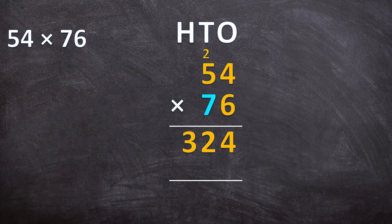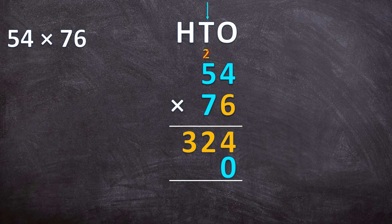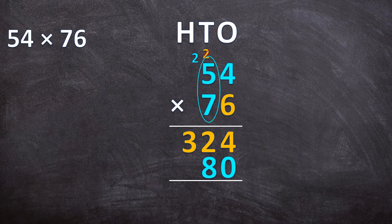Now we multiply 70 by 54. Remember: scratch out that carried 2 so we don't confuse ourselves, and add a 0 in our answer line because we are multiplying by 70 and not by 7. Now multiply the digits: 7 times 4 is 28, write down the 8 and carry the 2. Then 5 times 7 is 35, plus the carried 2 is 37. So now we have the answer for 6 times 54 and also the answer for 70 times 54.